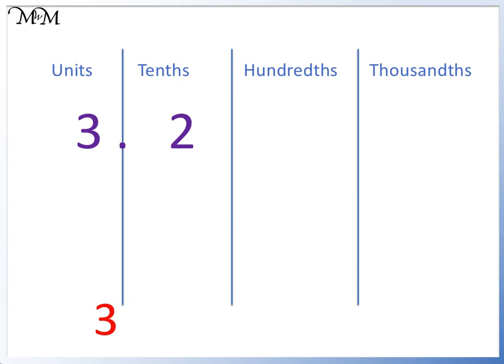Now we can concentrate on the right-hand side. 2 is in the tenths column, so the denominator is therefore 10. The 2 shows how many tenths we have, and we have 2 — so 2 tenths. Our number is 3 and 2 tenths. To take it a step further, the fraction can be simplified to a fifth by dividing both the numerator and denominator by 2, giving us 3 and a fifth.